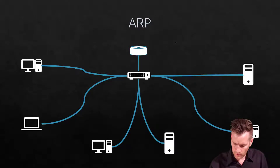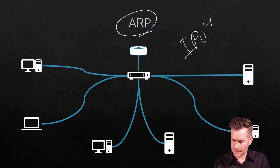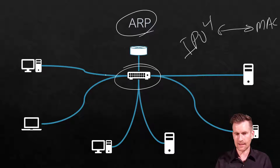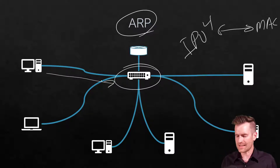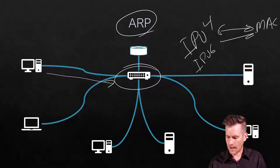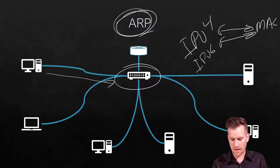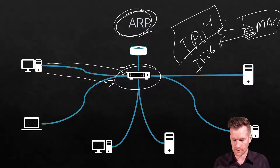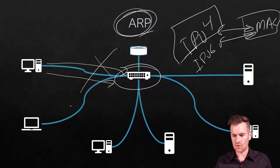In IPv4, we have ARP, Address Resolution Protocol, which translates between IPv4 addresses and MAC addresses. We still need to communicate via layer 2 MAC addresses in IPv6 as well, so we still need to translate from IPv6 to those MAC addresses. The problem with ARP is it uses broadcasts to discover that information — a frame gets sent out asking who belongs to this IPv4 address, and a reply comes back with a MAC address. We no longer have broadcasts in IPv6, so we have to send out multicasts, and we do that through neighbor solicitation.